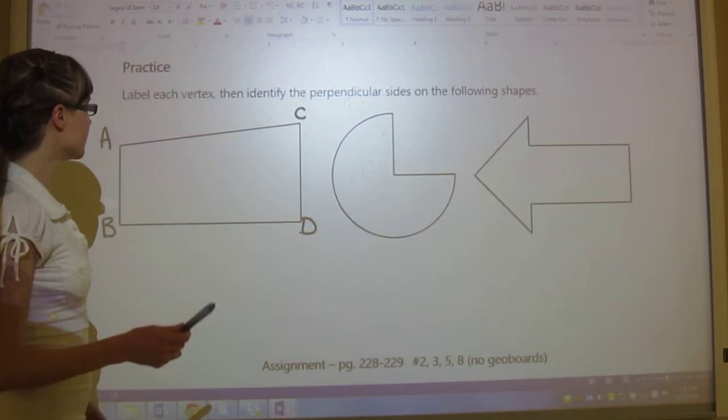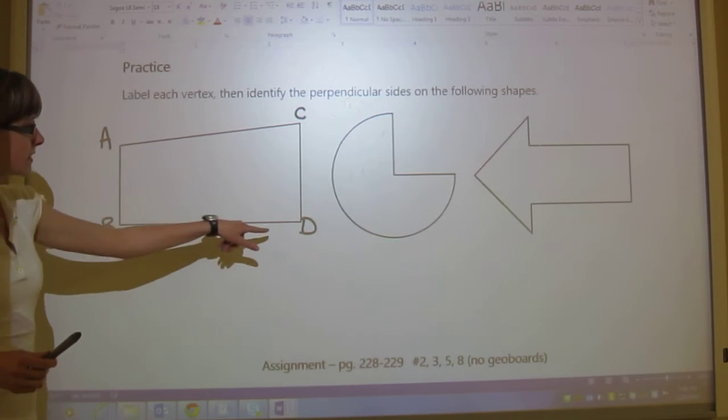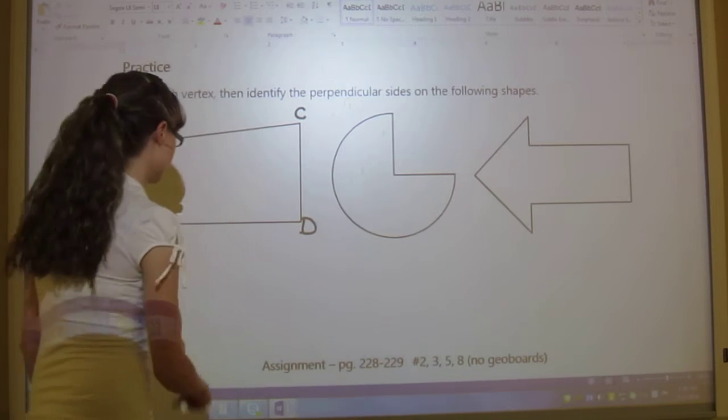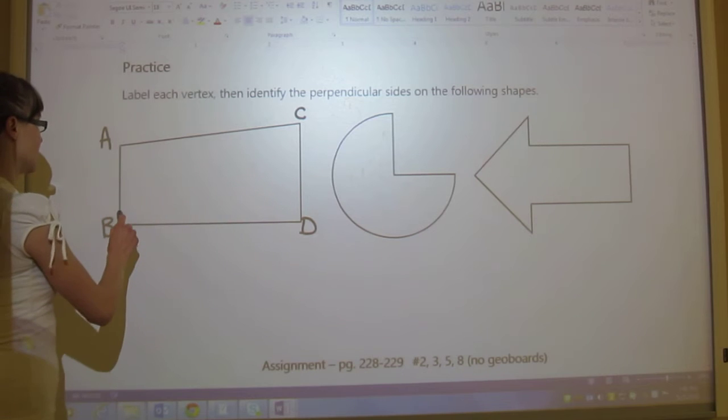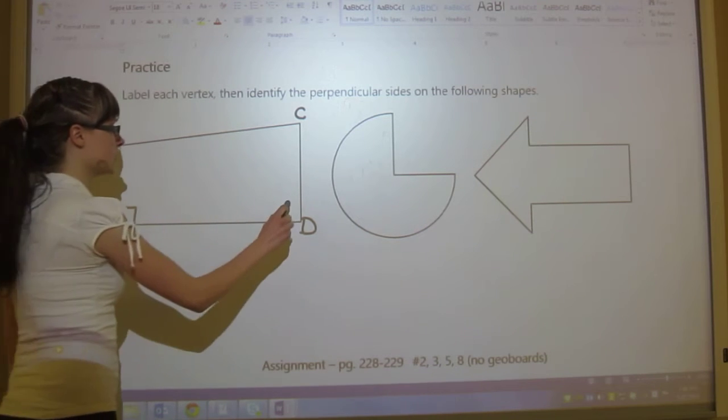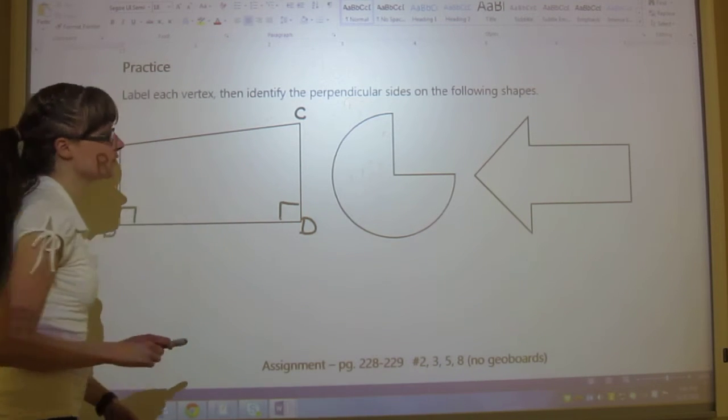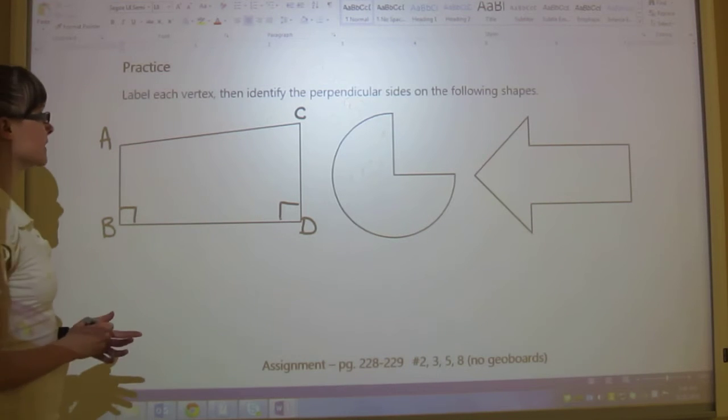So you kind of eyeball it and see. So I see that this line is straight across down the bottom here, and then these ones are straight up and down. So I'm going to draw a square in each of these corners to show that they're perpendicular.